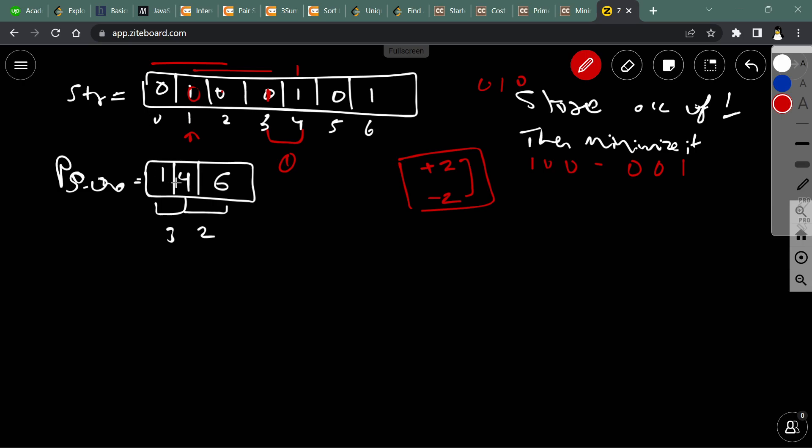Here we have all the positions. We need to just add plus 2 and minus 2 with all those, so we will get our answer. Just start with either plus 2 or minus 2.